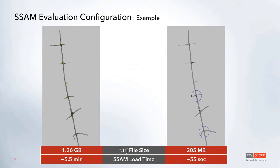Here's a quick comparison for a relatively small network with only six intersections. When collecting data for the entire network, the trajectory file is already over a gigabyte. When we define a couple of sections, it drops to about 200 megabytes. This also directly impacts load time in SSAM — with sections defined it takes about one minute, versus about five and a half minutes for the full network.